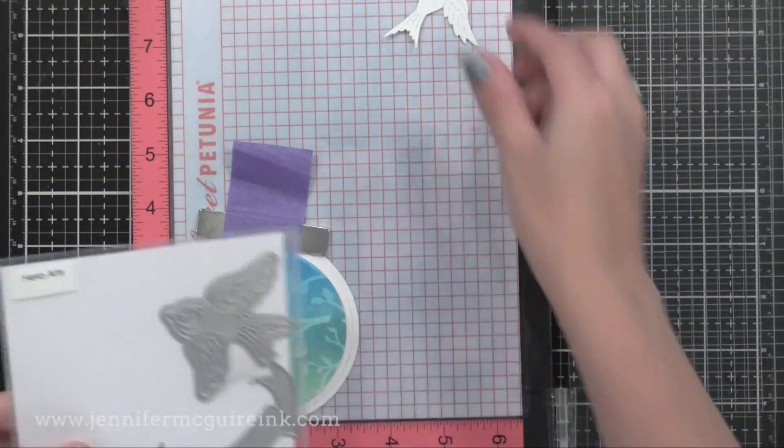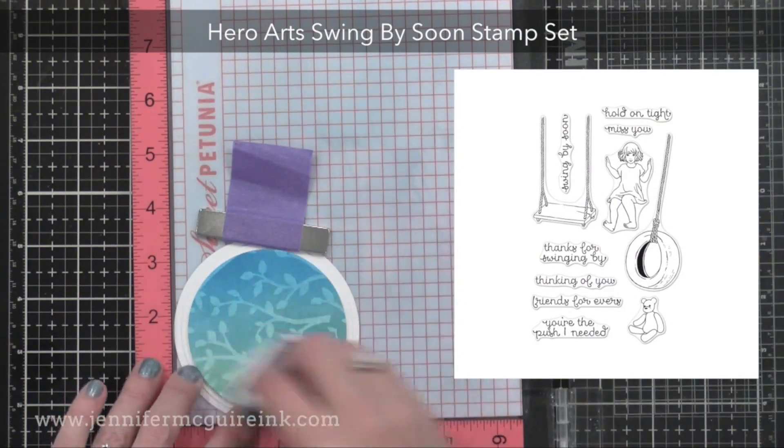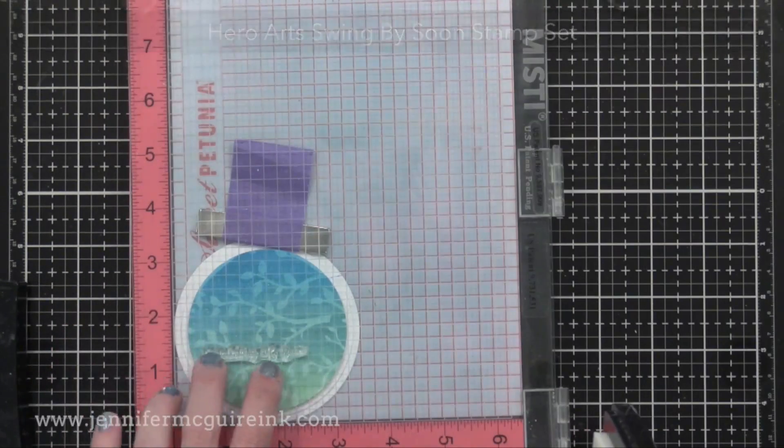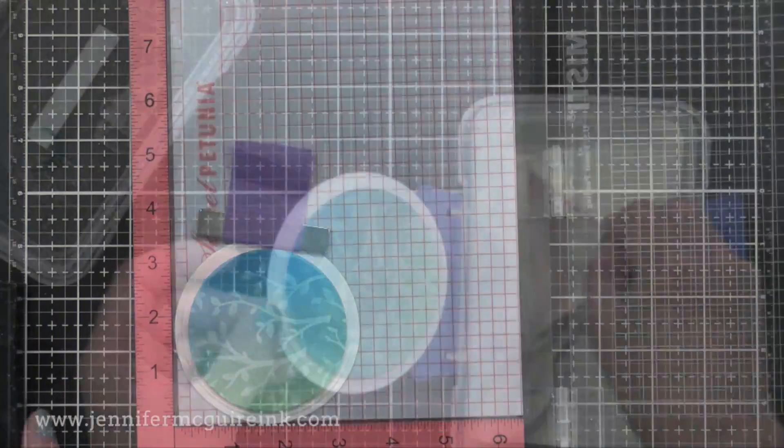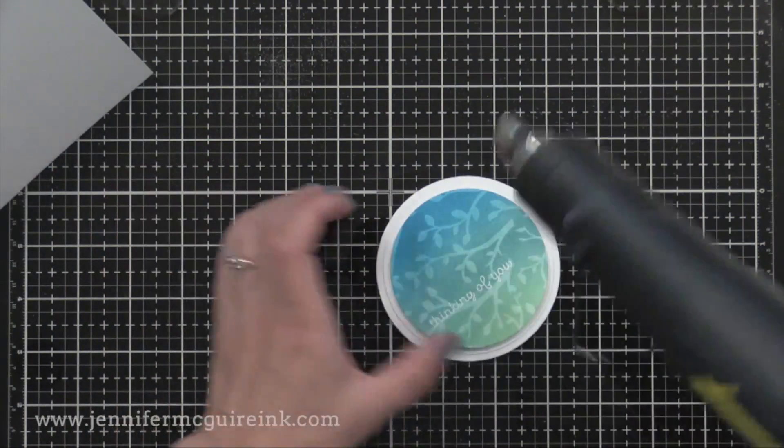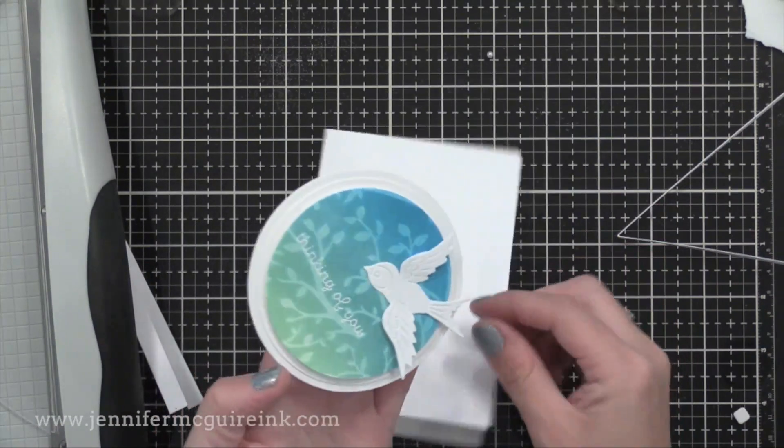But first, I'm stamping the Thinking of You message from this Hero Arts Swing By Soon stamp set that's also new with this release. So I'm stamping that with VersaMark ink, and then I will white heat emboss it. I really wanted a soft look for this card, and that soft white stamped image with the white die cut is just the perfect touch.